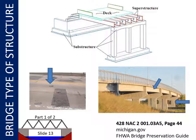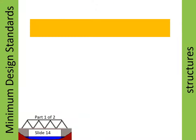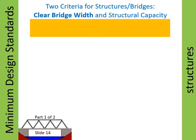There are two criteria associated specifically with bridges and non-buried structures: clear bridge width and structural capacity. Structural capacity also applies to buried culverts. If you find the first standards table, Table C on page 55, you will see these two criteria at the bottom of the table on page 56. Most other tables are similar. Let's focus on clear bridge width first and address structural capacity in a few minutes.